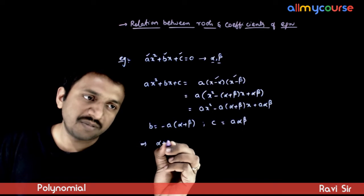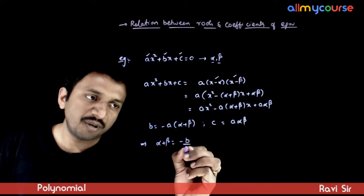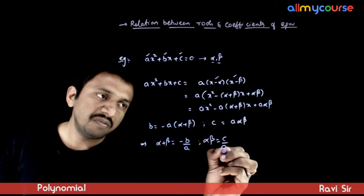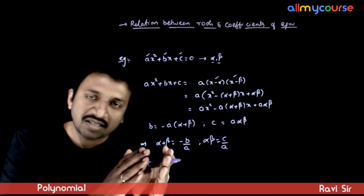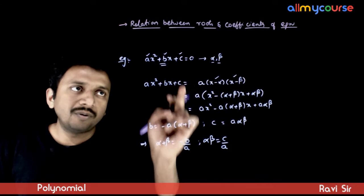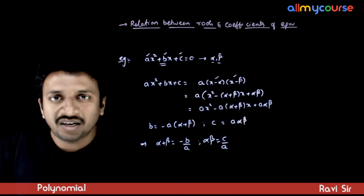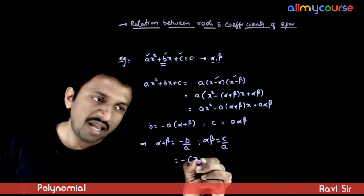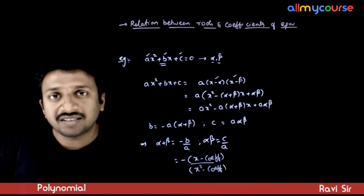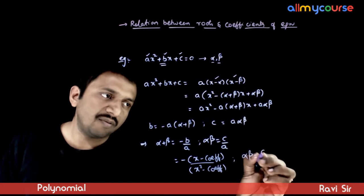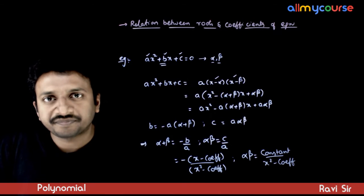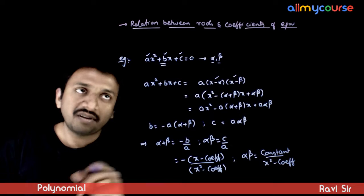This implies alpha plus beta equals minus b over a, and alpha·beta equals c over a. The sum of the roots equals minus of the x coefficient divided by the leading coefficient, and the product of the roots equals the constant term divided by the leading coefficient. These are the two relations for a quadratic equation.